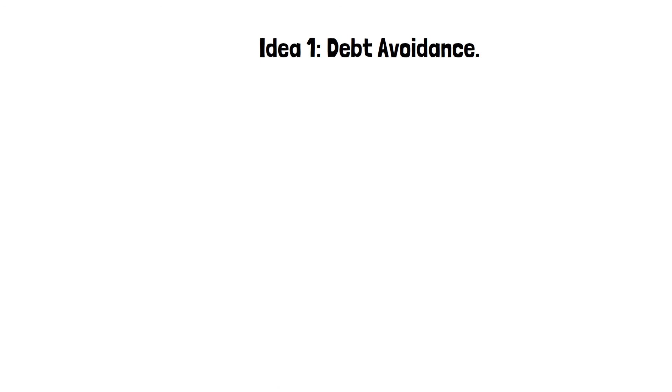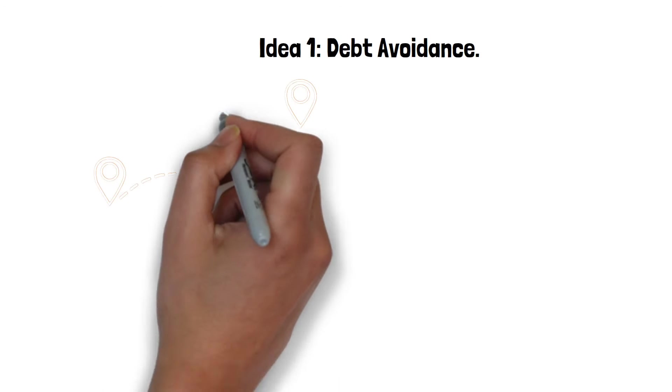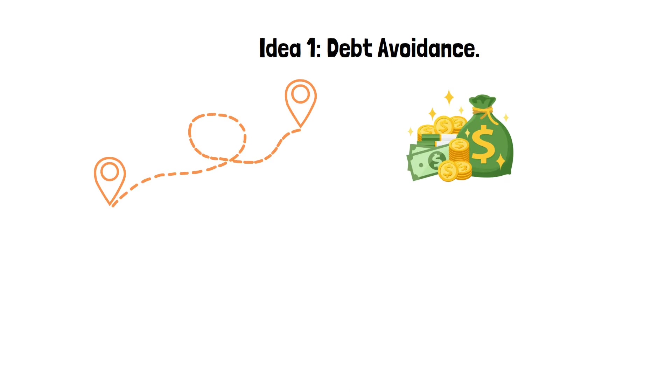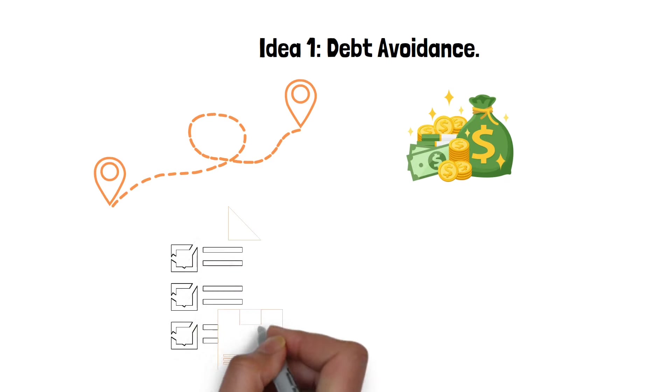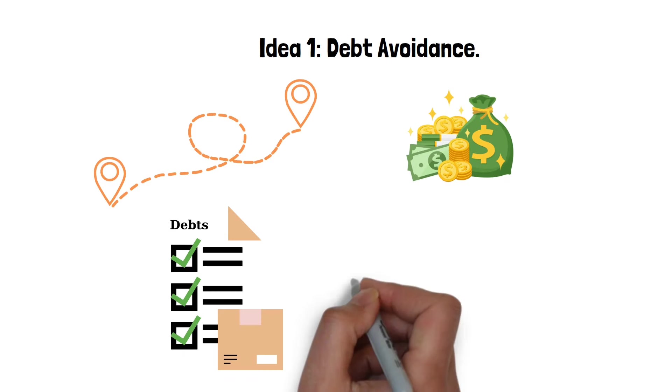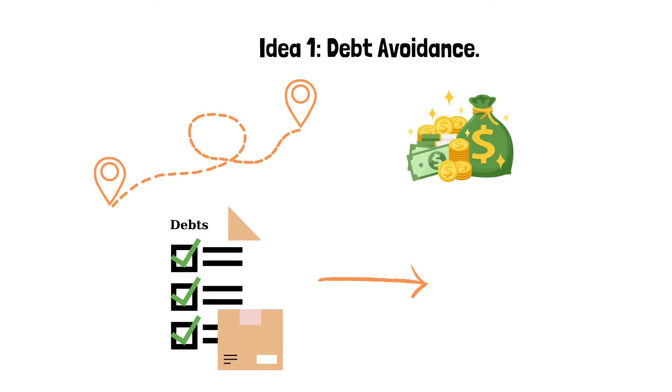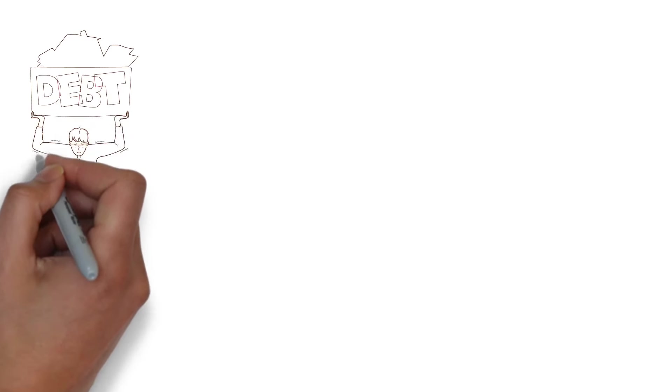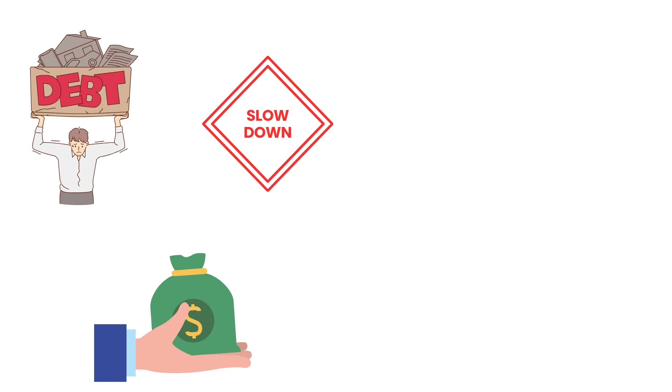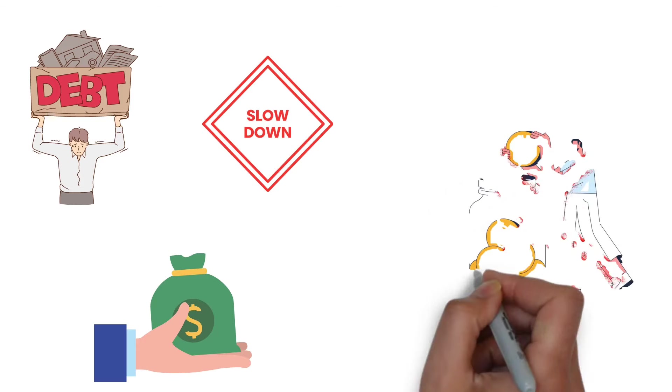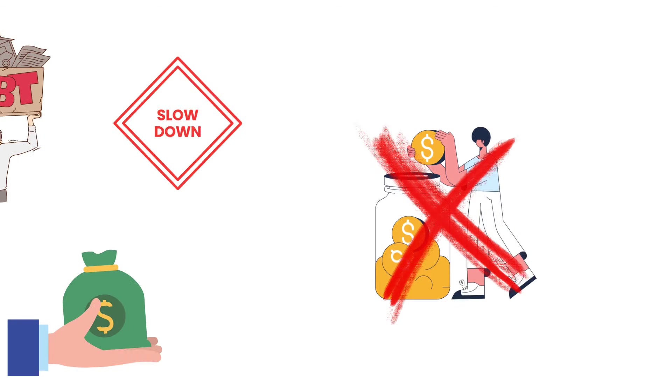Idea 1: Debt avoidance. Debt avoidance is a centerpiece in the journey to wealth. It suggests that steering clear of debt is a crucial step towards achieving financial freedom. Being in debt is like carrying a heavy backpack on your climb up the mountain to wealth. Every dollar you pay in interest to someone else is a dollar that isn't working for you in savings or investments.